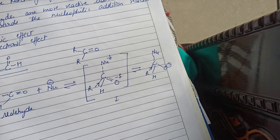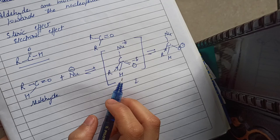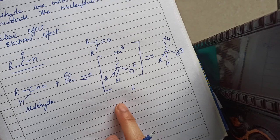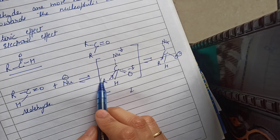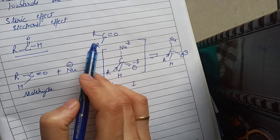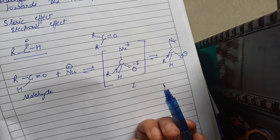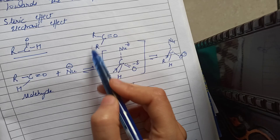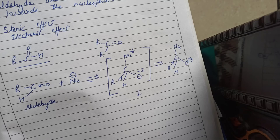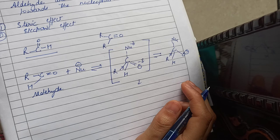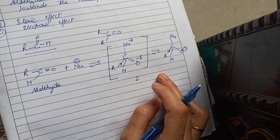When nucleophile attacks aldehyde, the transition state is more stable because there is less steric interference — aldehyde has only one alkyl group and one hydrogen atom. But in ketone, there are two alkyl groups, causing more steric interference and more inductive effect, making the transition state less stable and decreasing reactivity.